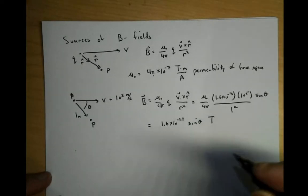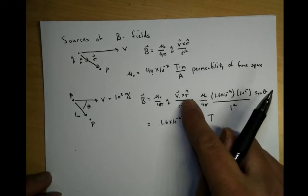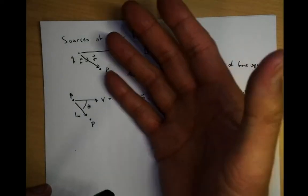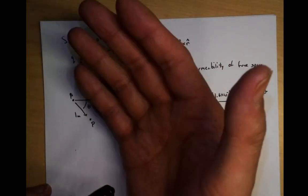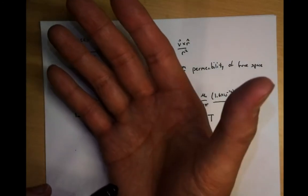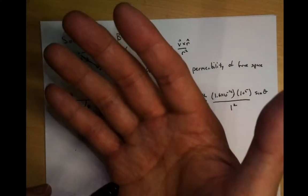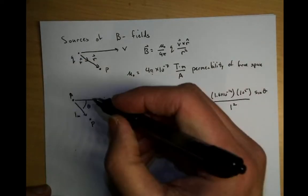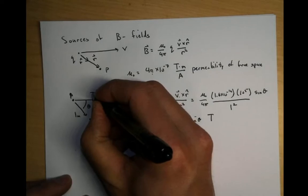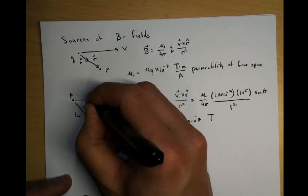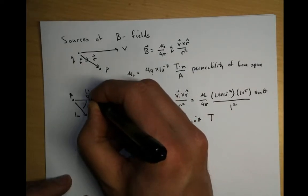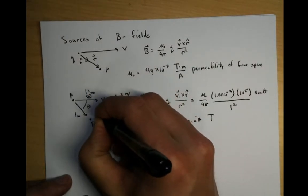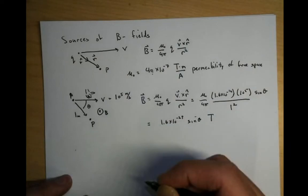Now let's get the direction. It's v cross r, so use the right-hand rule. My thumb points in the direction of v, my fingers point in the direction of r hat. The arrow sticking out of your palm points into the page. So the B field points into the page right there.